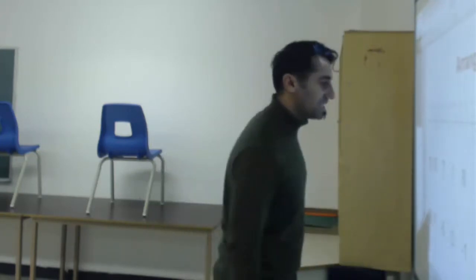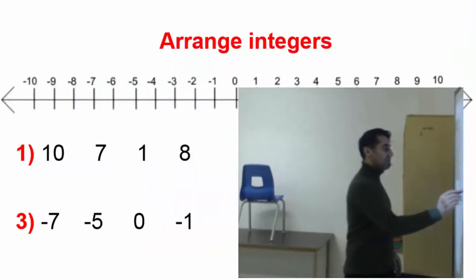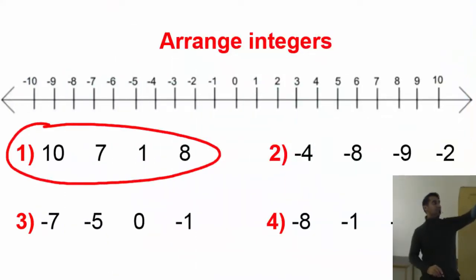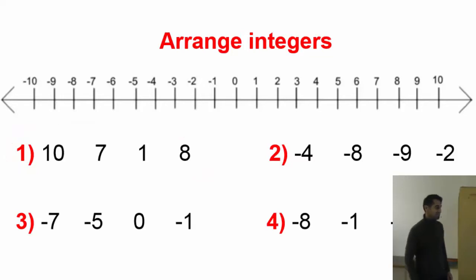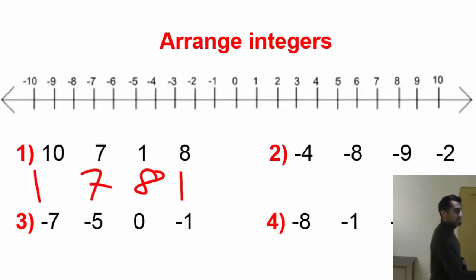Let's look at the first example here. All the integers are positive numbers, so they are easy to arrange. 1 is the lowest, and then 7, and then 8, and then 10.